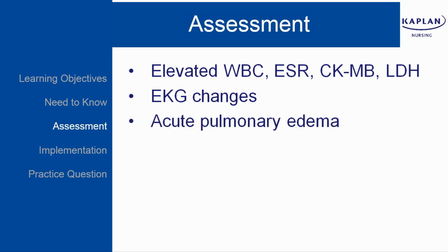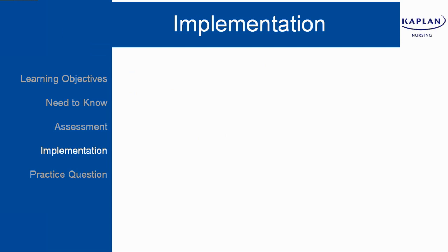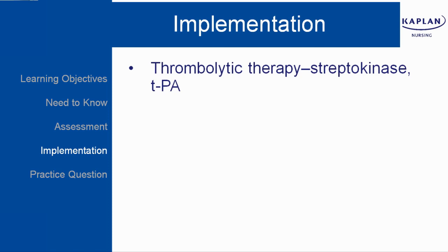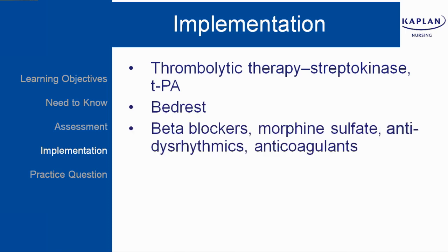Acute pulmonary edema — a sense of suffocating, gray facial coloring. Let's talk about implementation, or how you're going to provide care to clients with an MI. Thrombolytic therapy: streptokinase and TPA dissolve the thrombus and must be given within 6 hours of onset of the MI. Bed rest. Beta blockers, which will decrease the heart rate. Hold if the heart rate is less than 60, and be aware that bronchospasm is a serious side effect of beta blockers.